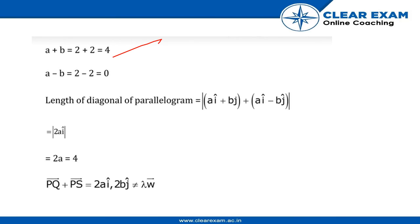So a + b = 4, a - b = 0. Length of the diagonal of parallelogram is |2ai| where 2a = 4. And PQ + PS = 2ai, 2bj, which is not equal to a constant times w.